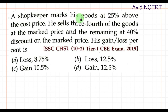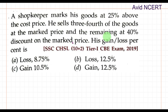A shopkeeper marks his goods at 25% above the cost price. He sells three-fourth of the goods at the marked price and the remaining at 40% discount on the marked price. His gain or loss percentage is the question.